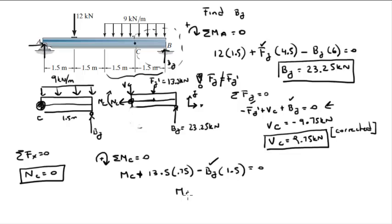We plug in By and solve for the moment. The moment equals 24.75 kilonewton meters, and it's positive, so it's going clockwise. Final answer for the shear, normal force, and moment.